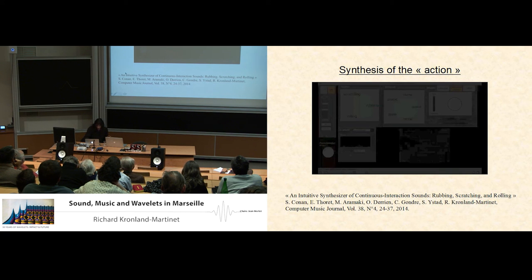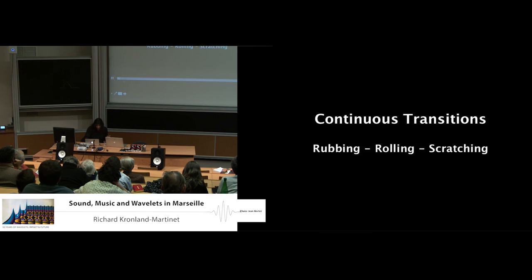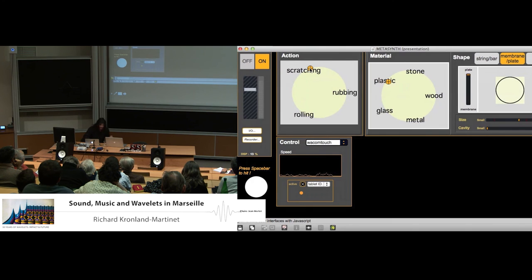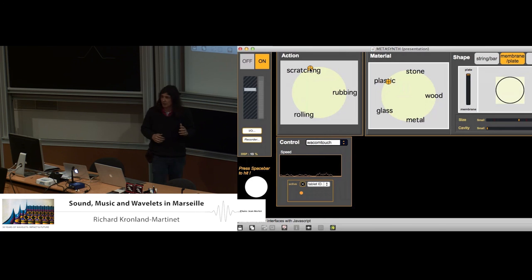So here I play this movie. I stop it now. You recognize on the right the interface corresponding to the object. And now we have added the space corresponding to the action. So now we decide that the object is a plastic plate, and we just play on the action. And we will see that it's possible to play interactively. And let's begin.